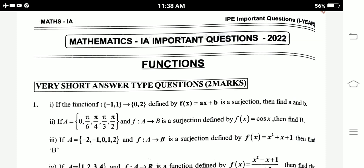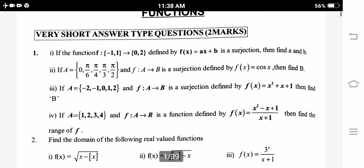Very short answer type questions, two marks important questions. First question: If the function f: {-1,1} → {0,2} defined by f(x) = ax + b is a surjection, then find a and b.